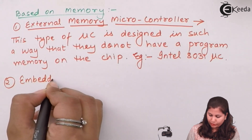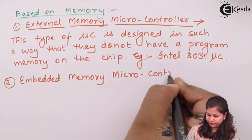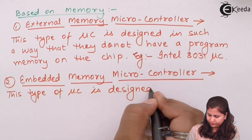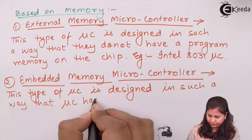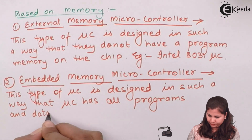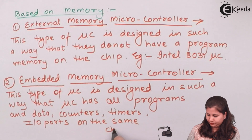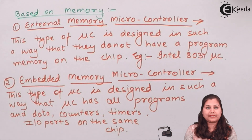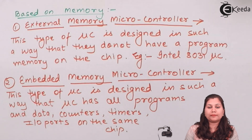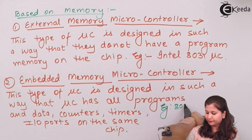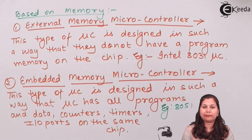In embedded memory microcontrollers, the program memory, data memory, counters, timers, serial input/output ports, and interrupts — all these devices are embedded on the same chip, which is why it is called an embedded memory microcontroller. An example of this type is the 8051 microcontroller, which is an embedded type of microcontroller.